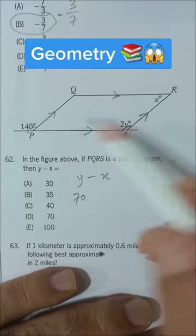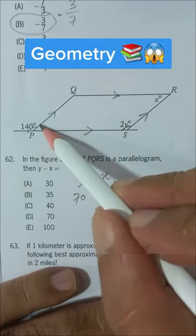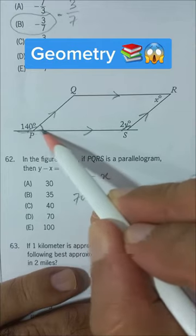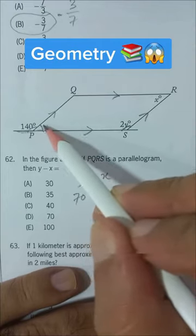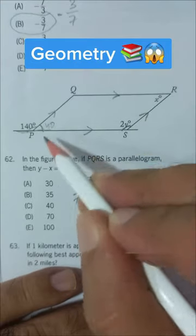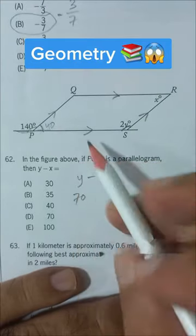And in parallelogram, opposite angles are equal. Now this angle and this angle, they are on a straight line, so they add up to 180. 180 minus 140 is 40, so 140 plus 40 will be 180.